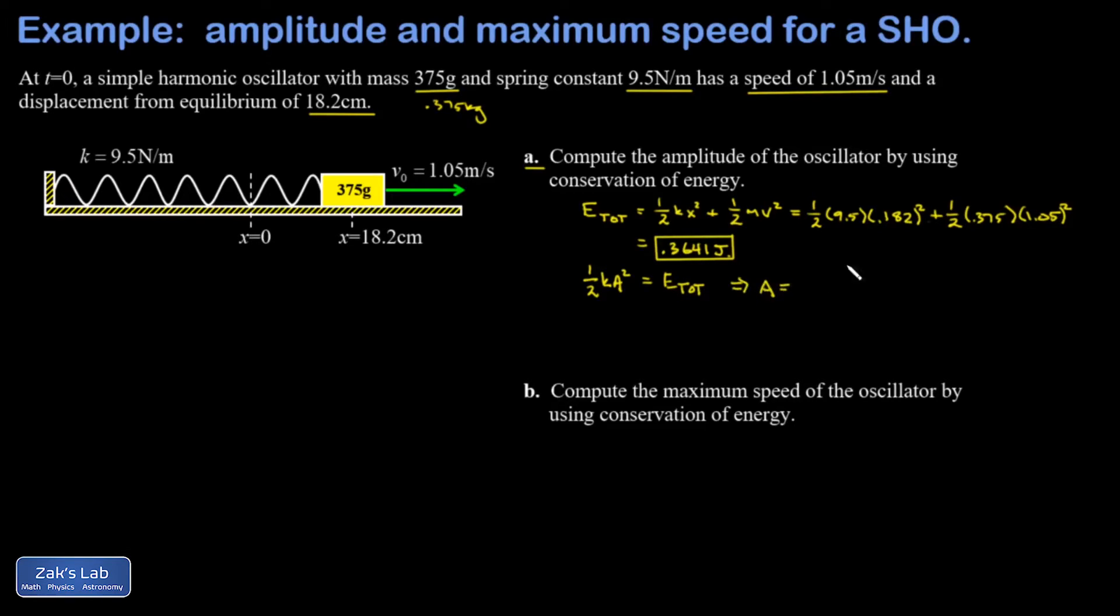I get the square root of twice the total energy over k, and we plug in our numbers. We arrive at an amplitude of 0.277 meters, and I think the more natural units here would be centimeters, so that's 27.7 centimeters amplitude.